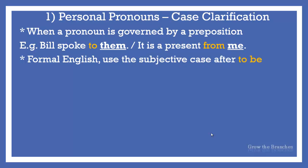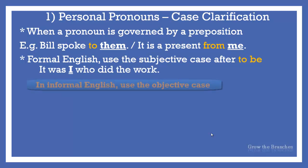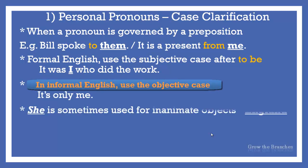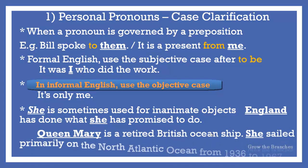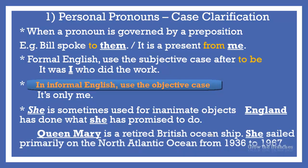In formal English, the subjective or nominative form is used after the verb to be: It was I who did the work. But in informal English, the objective form is frequently used: It's only me. The personal pronoun she is sometimes used for inanimate objects to express affection. For example: England has done what she has promised to do. Queen Mary is a retired British ocean ship — she sailed primarily on the North Atlantic Ocean from 1936 to 1967.